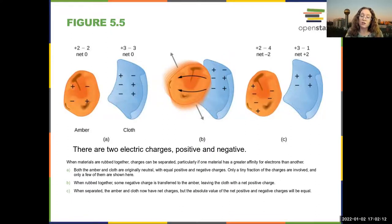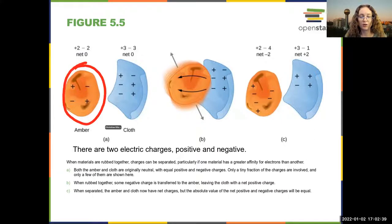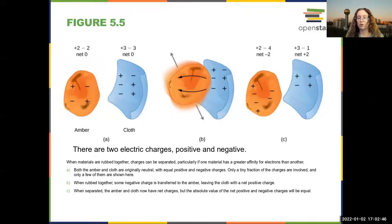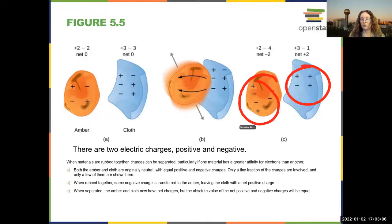The charge carriers in most macroscopic objects are the electrons, because it's easier to move electrons. The negative charges move around, and a lot of the early polarization experiments work because you start with two objects — in this case, the amber and the cloth. When you rub the cloth on the amber, some of the electrons from the cloth move onto the amber, leaving more positive charges on the cloth, so you have a net charge.